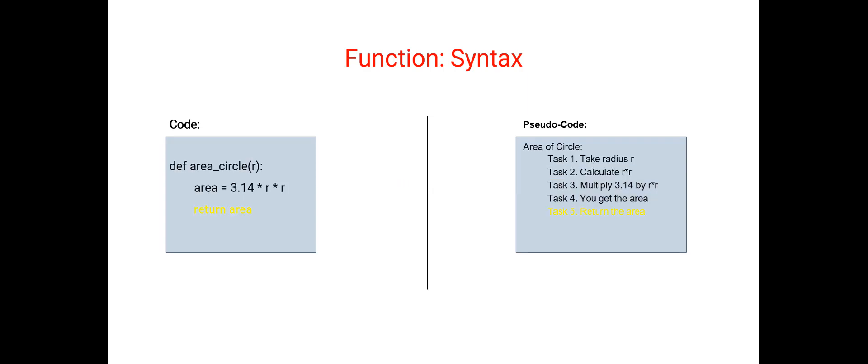And finally, there is another interesting parameter here, which is return. So the return is returning what we have calculated. Return is the keyword. After that, you write the name of the variable that you calculated in the subtask. Now these are some of the concepts that will be more clear in the code. So we are going to see them in much more depth in the next video.